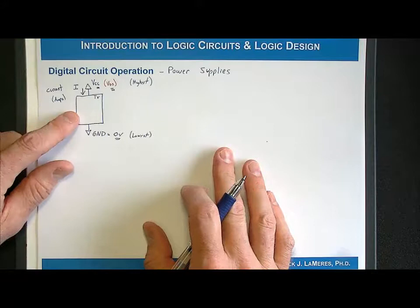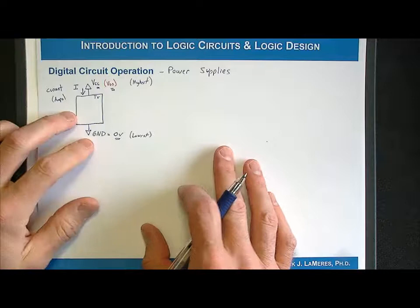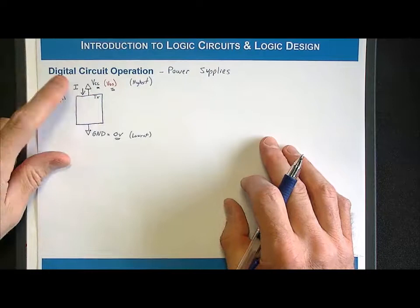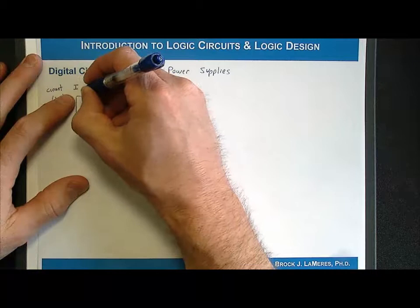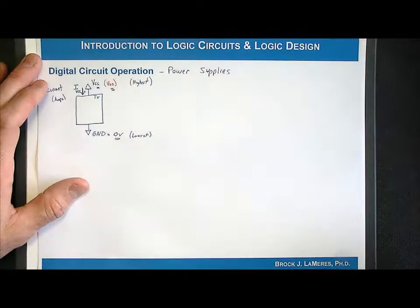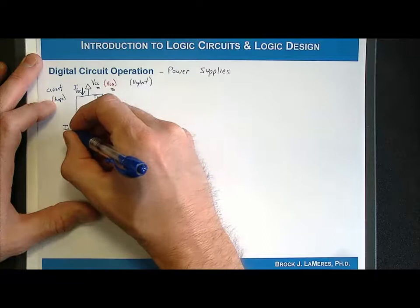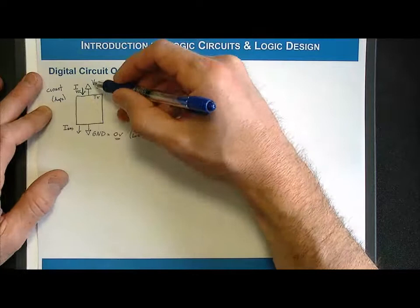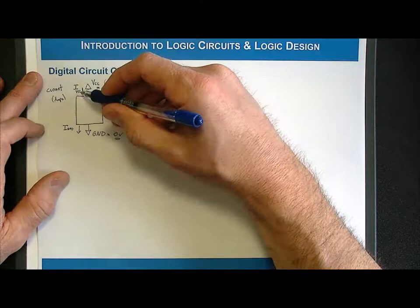When you look at the power supply voltages — VCC and ground — you then look at your power supply currents. The current that flows into the device from VCC we'll call I_VCC, also known as ICC. The current flowing into ground is I_GND. Current is directional: it flows from VCC into the device, and then out of the device into ground.